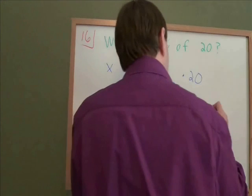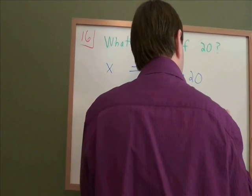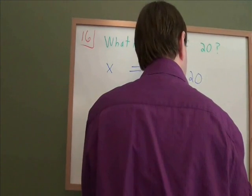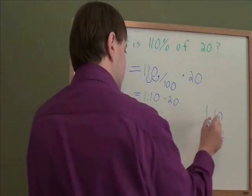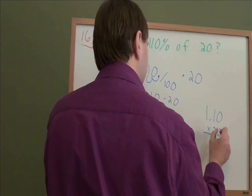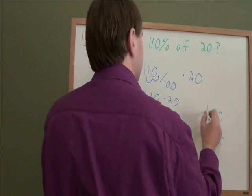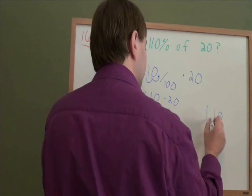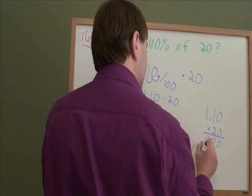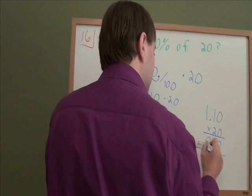To do that, we need to multiply. 1.10 times 20. Multiplying decimals, you start by multiplying like usual. 0 times 0 is 0. 0 times 1 is 0. 0 times 1 is 0. 0 times 1 is 0. 2 times 0 is 0. 2 times 1 is 2. 2 times 1 is 2. 2 times 1 is 2. We add those rows.